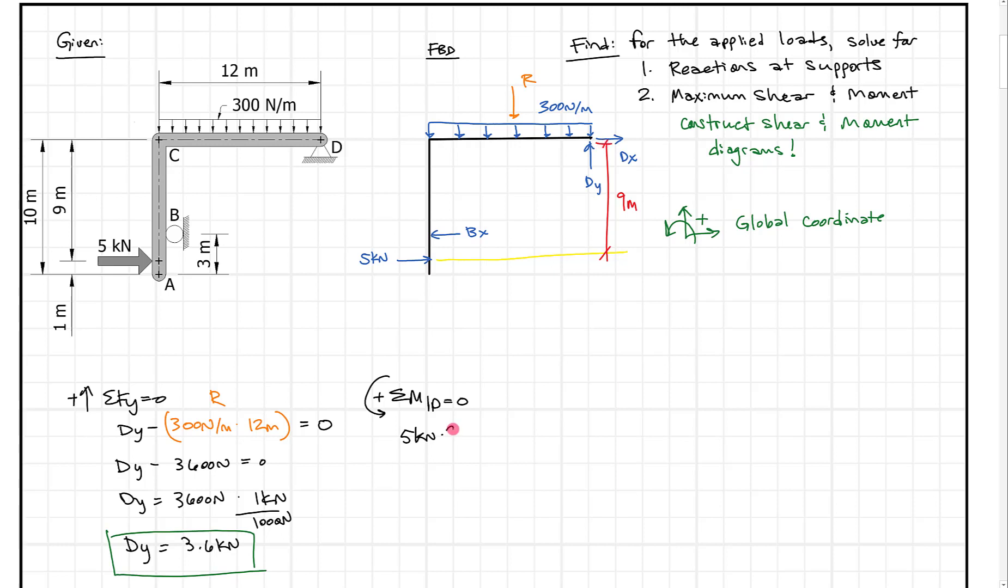Next we have Bx times, what's our distance? We want the distance between the line of action of the force and point D, which is ten minus three, or seven meters. Times seven meters. Let's see which way this causes rotation. Bx causes rotation opposite our positive sign convention, so it's negative. Minus Bx.